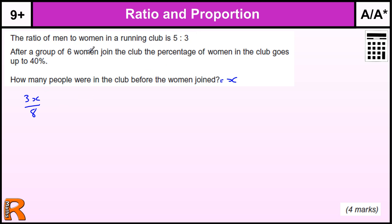And then when 6 women join, that is now equal to 40%, which is the same as 40 over 100, or 0.4, times by the new number of people in the club, which is X plus 6. So we've come up with that equation.